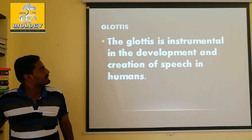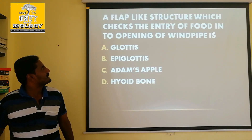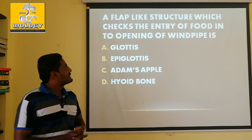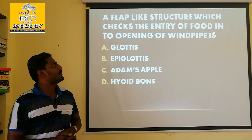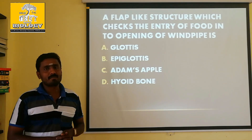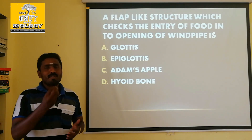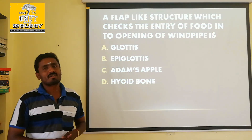Actually, glottis is an explanation. It is a flap-like structure which checks the entry of food into the opening of the windpipe. When food materials enter, it will be the epiglottis that controls this.